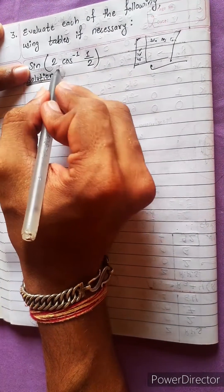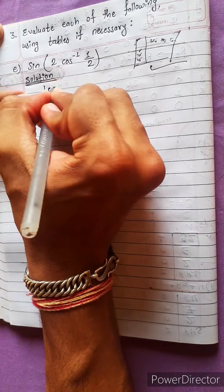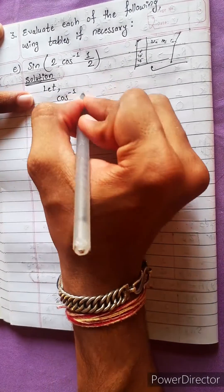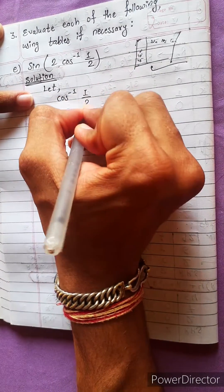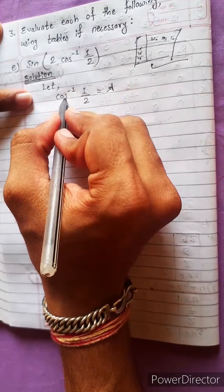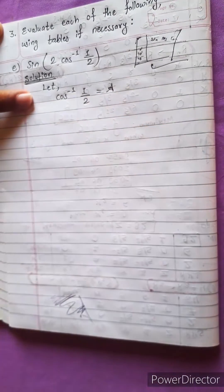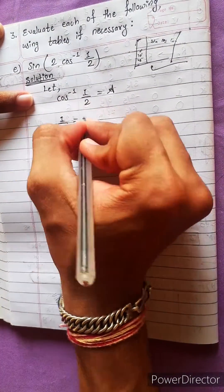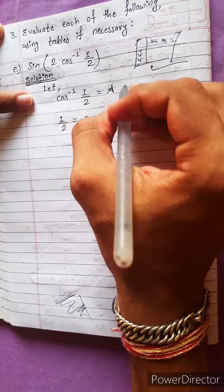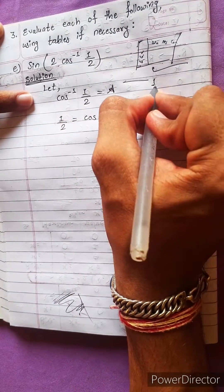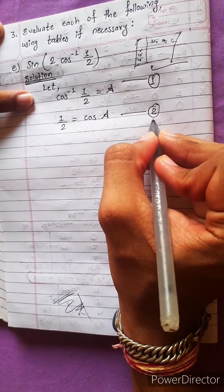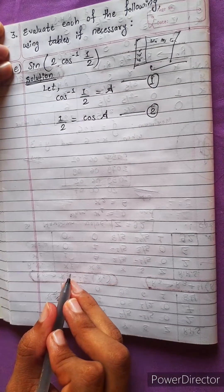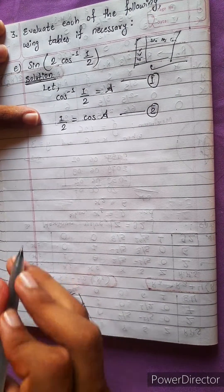Here is sin(2·cos⁻¹(1/2)). The first step: let cos⁻¹(1/2) = A. Then cos goes to this side, and we get 1/2 = cos A. This will be equation 1, and this equation 2. These two equations we need while solving the later part of this question.